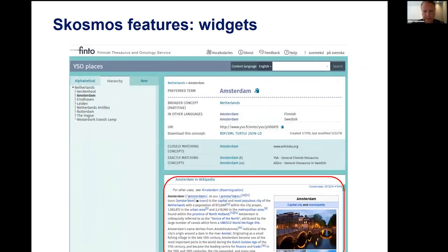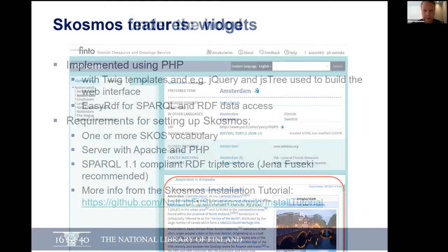This is something quite new - the Wikipedia widget came out last year. It's based on Wikidata links available in some of our vocabularies. Currently YSO places are linked to Wikidata and we are also linking our general Finnish ontology to Wikidata, and we will make the Wikipedia widget available there too. This basically gives you a view to the Wikipedia article linked to the Wikidata concept, which is then linked to the concept in YSO places. You can browse the Wikipedia article here or click the link to go to Wikipedia.